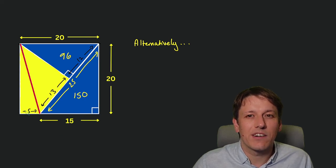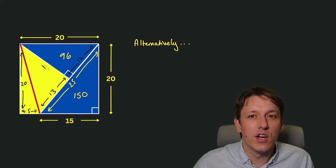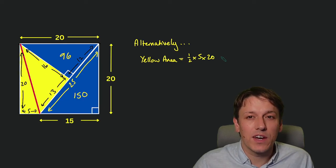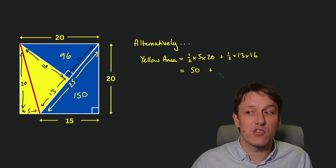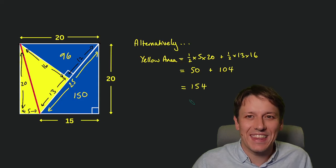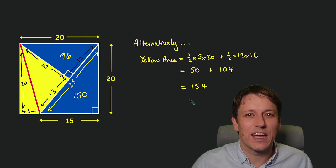So we can split the yellow area into two triangles like this, where we know the base and the height of those as well. So we could work them out by addition as well, a half times 5 times 20 and a half times 13 times 16. That would give us 50 plus 104, which is 154. So we get the area directly by adding those two triangles together.